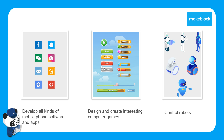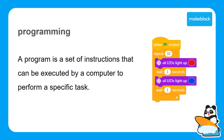So with programming, you can do a bunch of things like develop all kinds of mobile software and apps. You can design and create really interesting computer games. And you can do things like control robots. To put it simply, a program is a set of instructions that can be executed by a computer to perform a specific task.